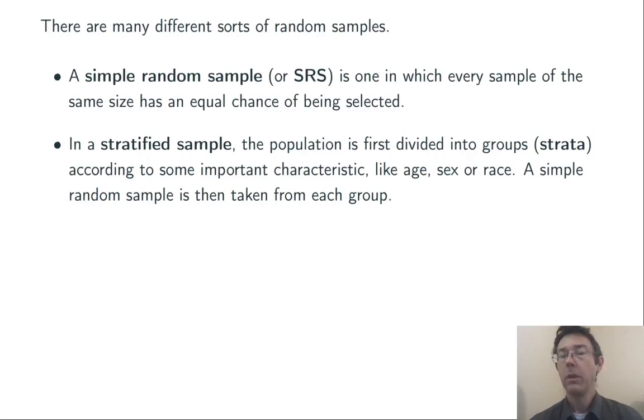In a stratified sample, the population is first divided into groups, strata, according to some important characteristic like age, sex, or race. And then a simple random sample is taken from each group.